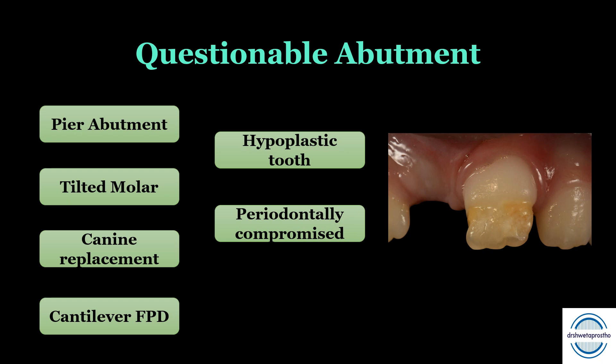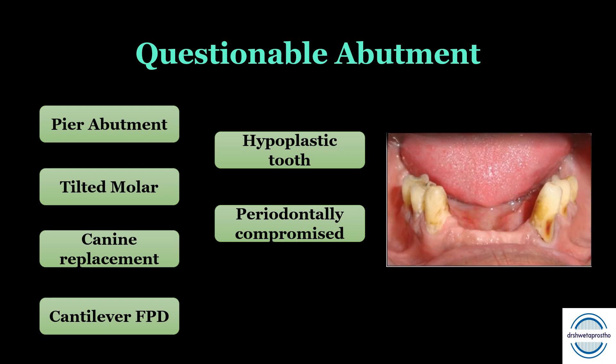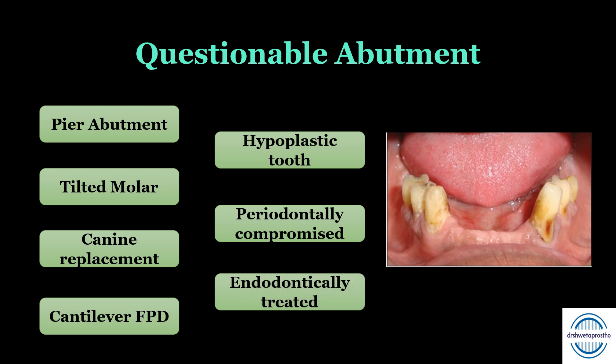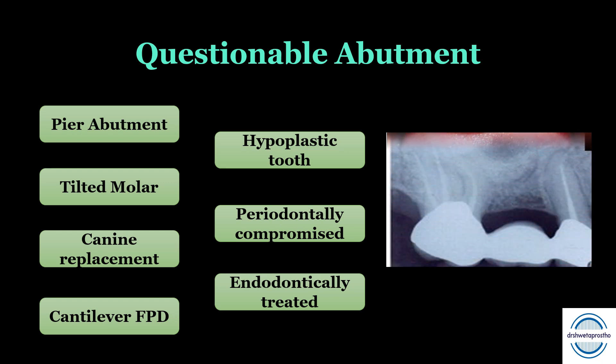Periodontally compromised teeth — those with more than three millimeters of probing depth — are considered periodontally compromised and need management. Last come the endodontically treated teeth, which are used as abutments for FPDs, but we have to consider how much tooth structure remains and whether they can be used as abutments.